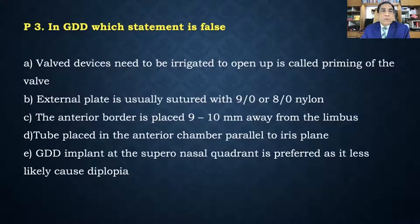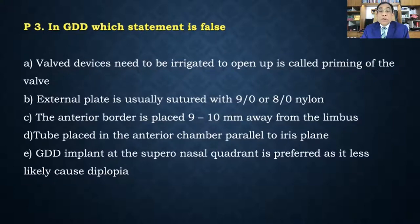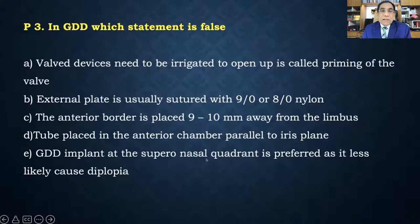In our next poll: which statement is false? Valve devices need to be irrigated to open them — called priming. The external plate is sutured with 8-0 or 9-0 nylon, with the anterior border placed 9–10 mm from the limbus. The tube is placed in the anterior chamber parallel to the iris plane. The correct answer: device implantation at the supratemporal quadrant is preferred, not supranasal — supranasal causes diplopia.